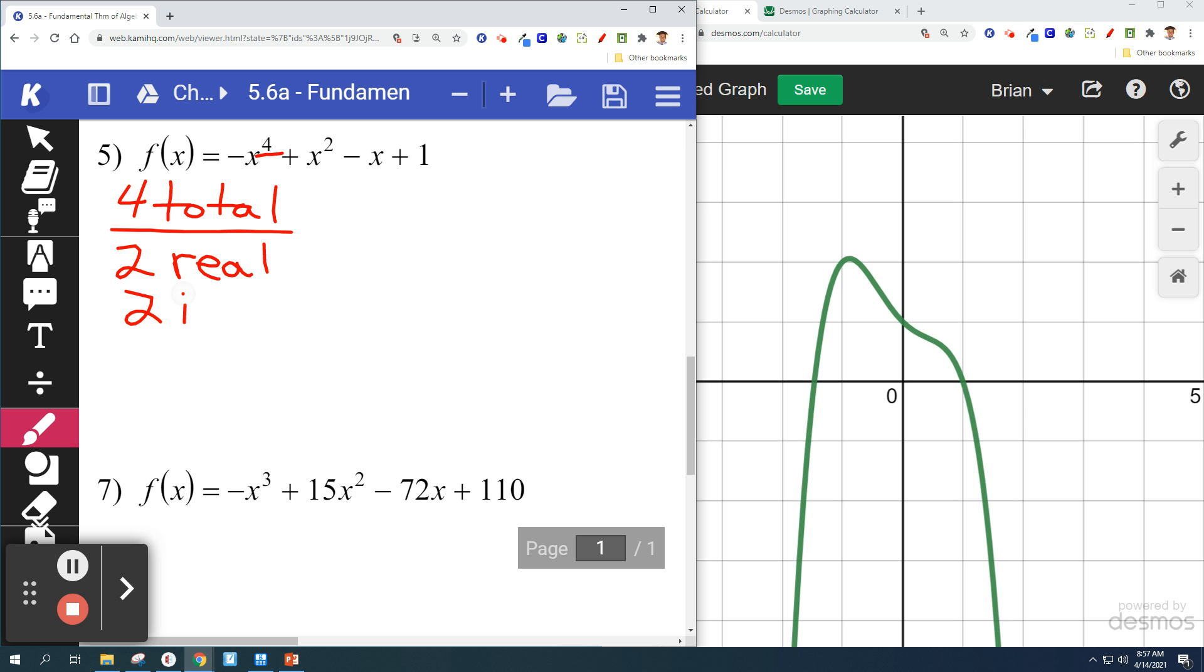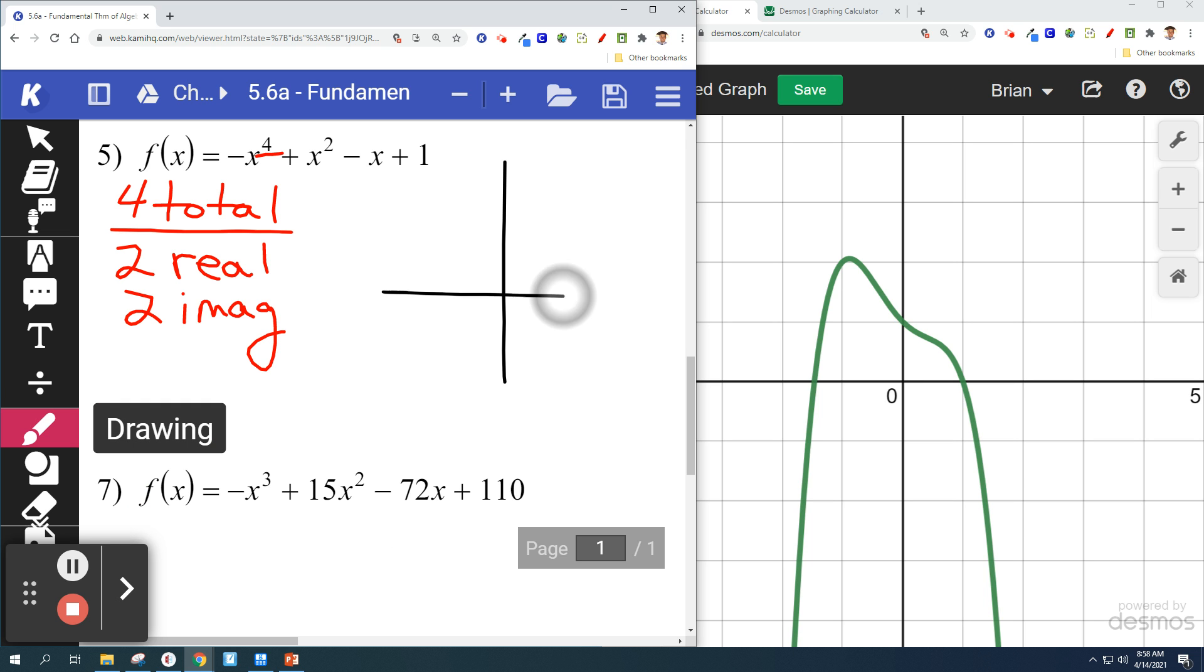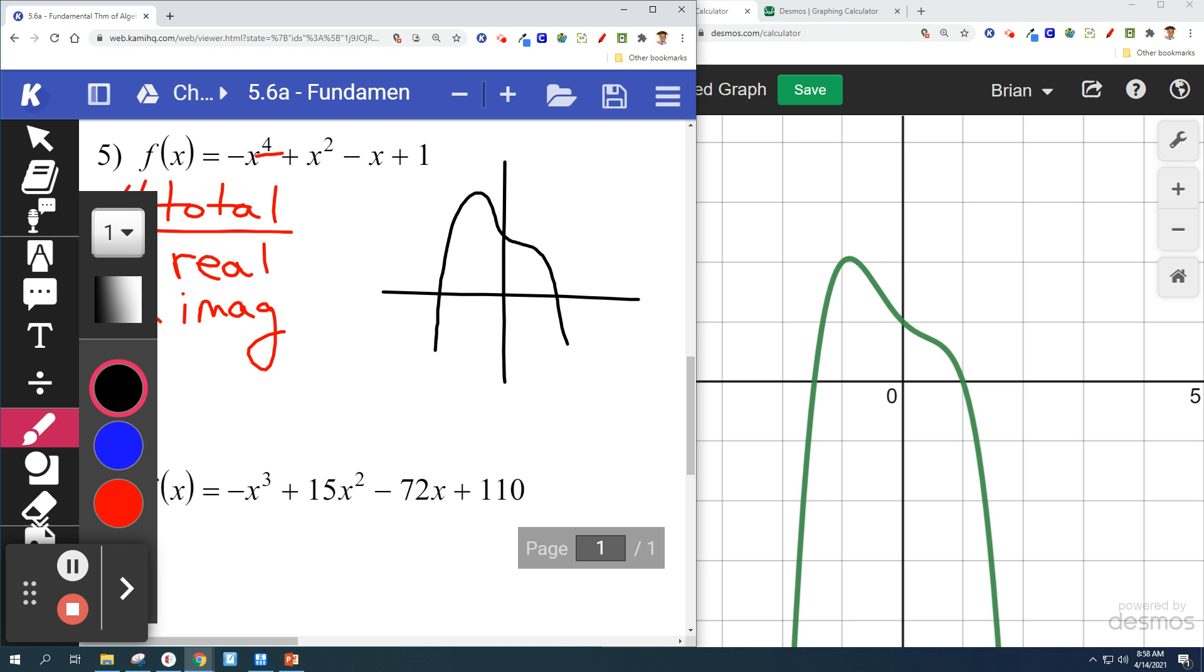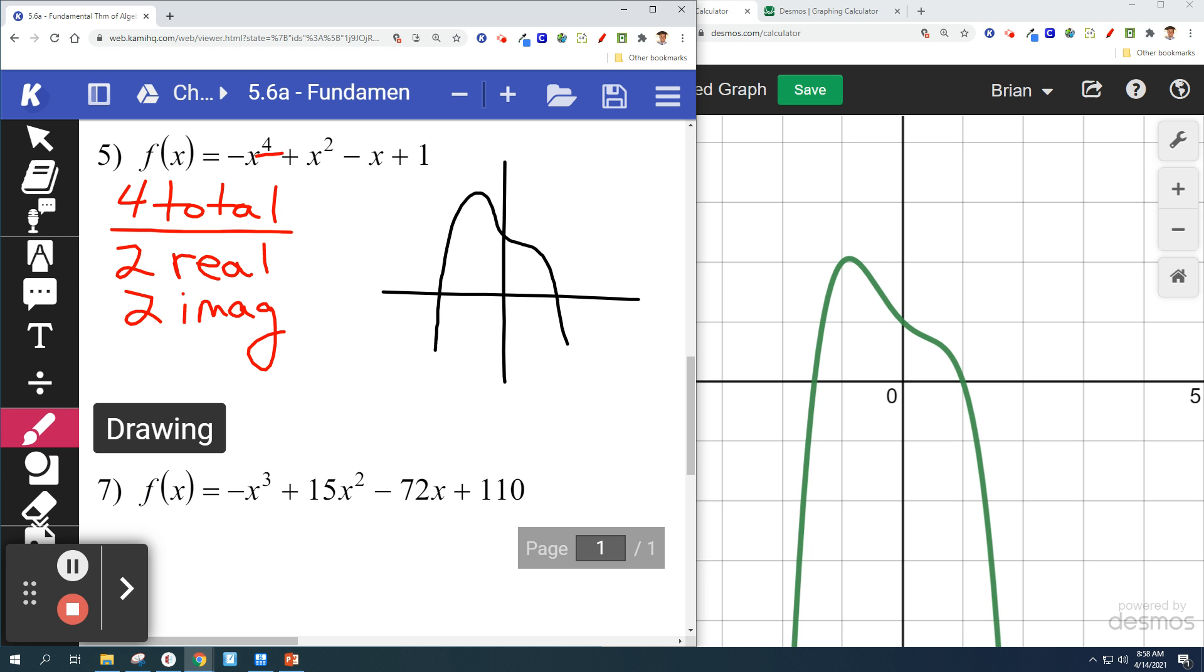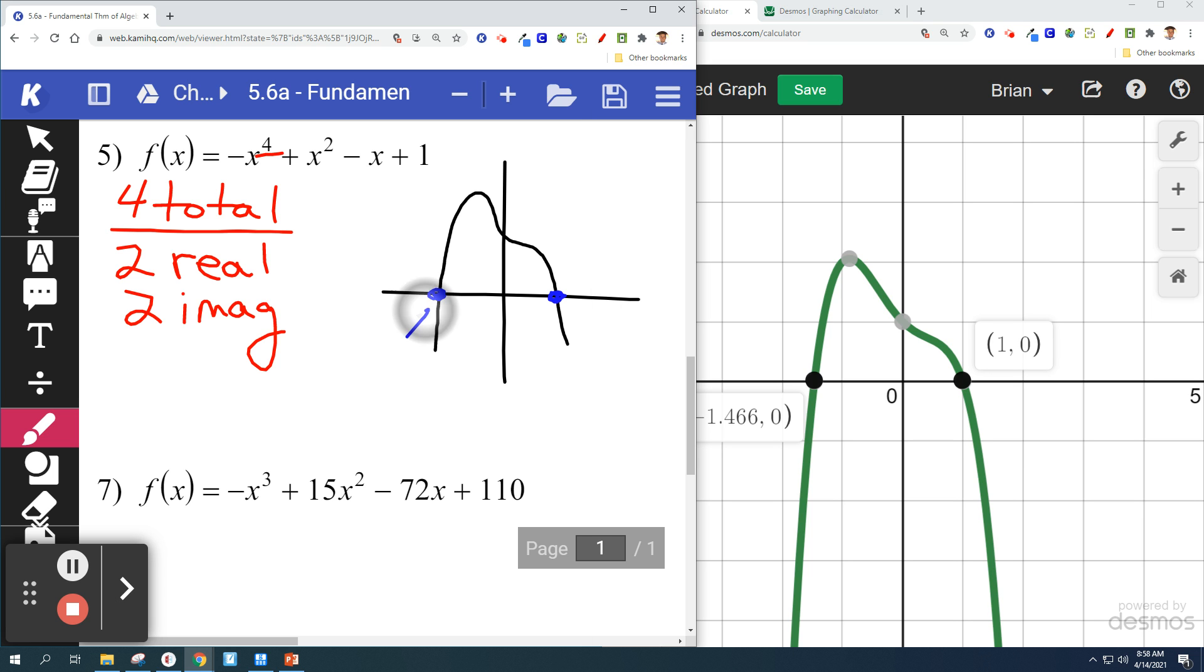Two real, two imaginary. So we draw a quick sketch. This thing looks like this. Our real solutions are right there. The real numbers. Negative 1.466. And positive 1.